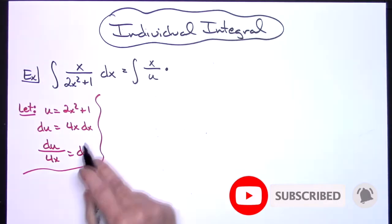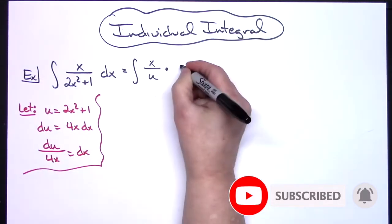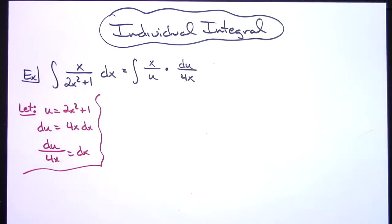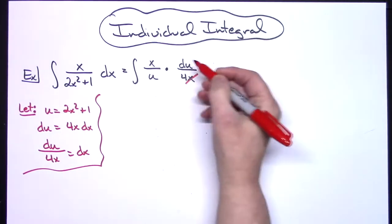I'll replace the dx with what that equals, du over 4x. What that's going to let me do now is cross out the x's.